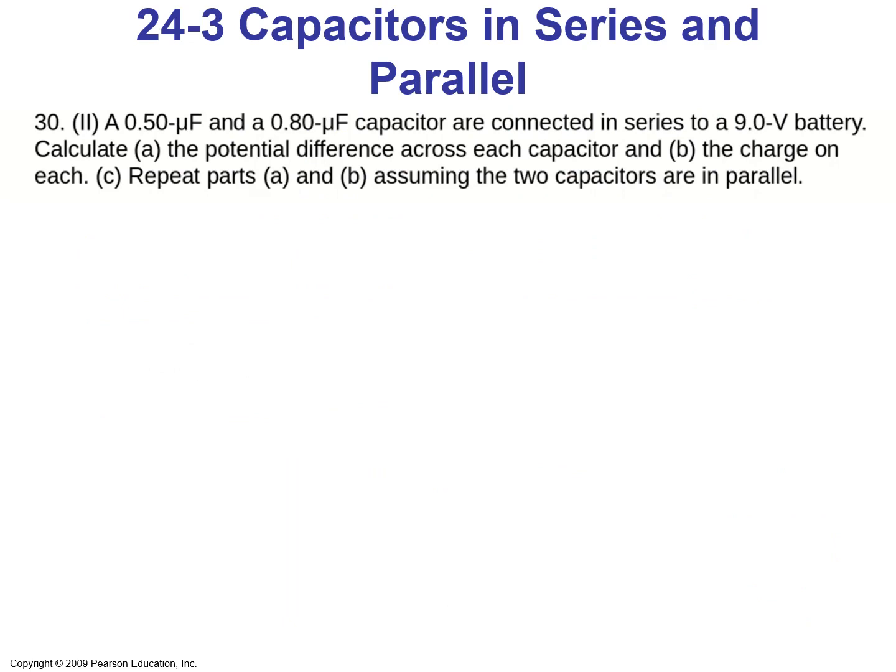Let's consider problem number 30 from the book. A 0.5 microfarad and 0.8 microfarad capacitor are connected in series to a 9-volt battery. Calculate (A) the potential difference across each capacitor and (B) the charge on each. Part (C) repeats A and B assuming the two capacitors are in parallel.